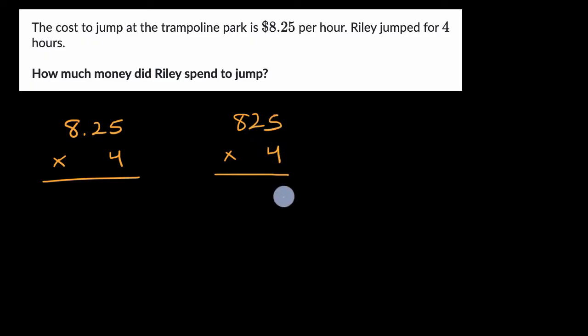Four times five is 20. Regroup that two. Two times four is eight. Plus two is 10. Regroup the one. Eight times four is 32. Plus one is 33. So we get 3,300 here. So what do we think this is going to be? It's going to have the same digits, but where do you think that decimal is going to be?